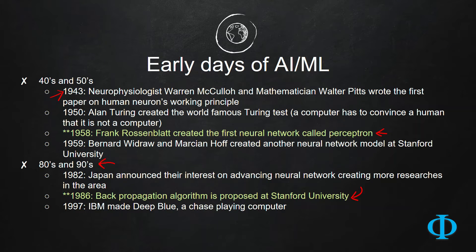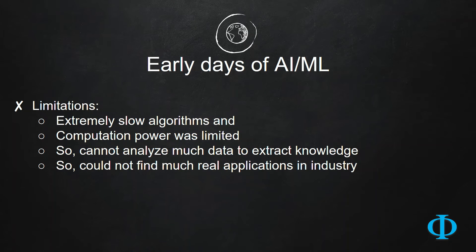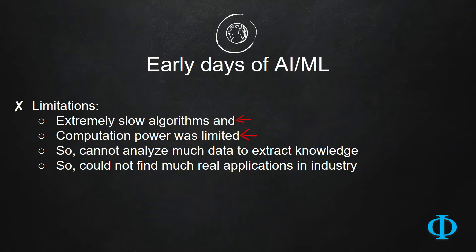However, because of several limitations, it was not getting much traction in the community. The algorithms being proposed were extremely slow, and the computational power was also limited. For example, CPUs were not so advanced, and memory size was limited. So there were bottlenecks on two fronts: slow algorithms and limited computational power, meaning the industry could not analyze much data to extract knowledge, which was the biggest reason machine learning did not find many real applications.